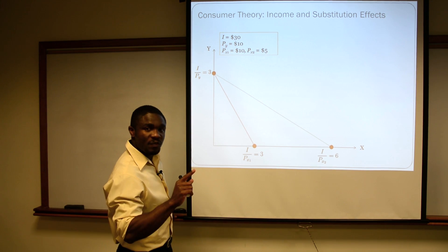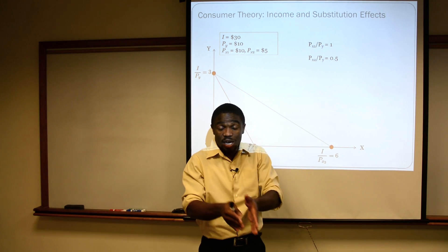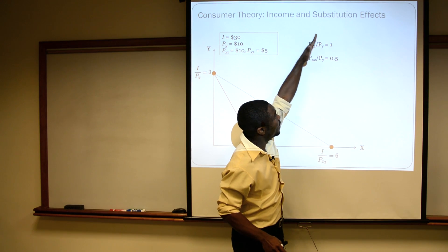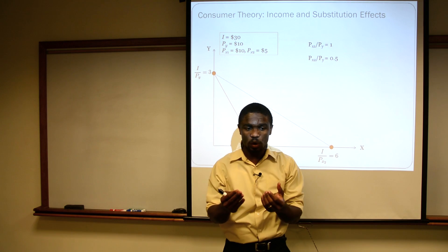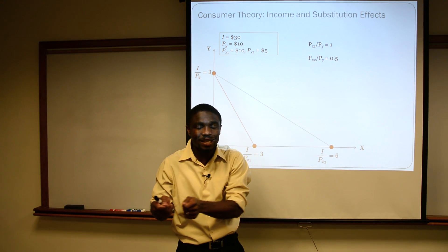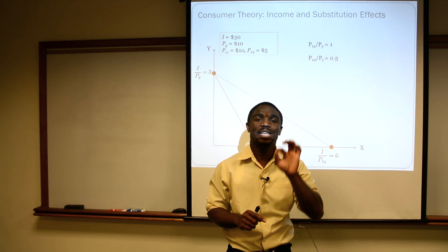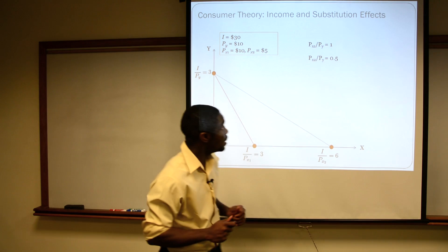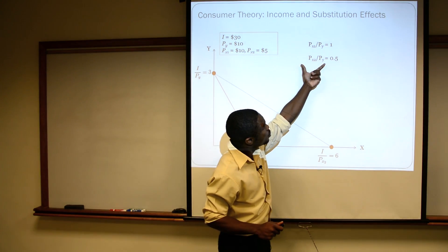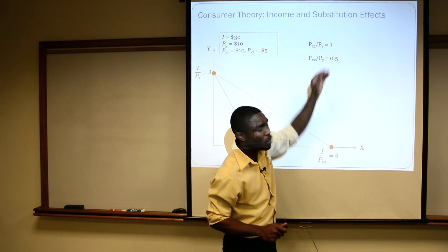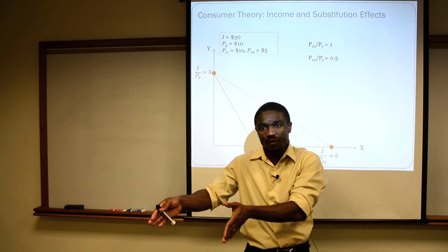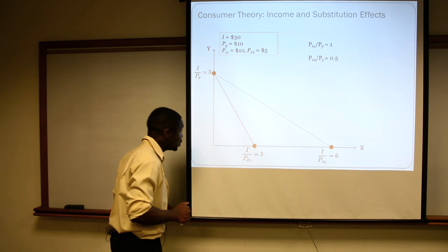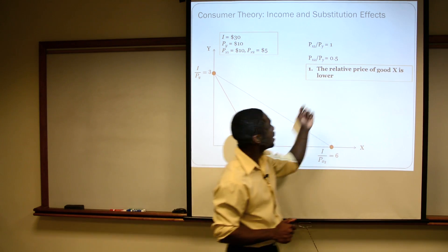What does this mean? The first thing is what consumers generally would respond. The good is cheaper — more specifically, the good is relatively cheaper. So the price of X divided by the price of Y originally was one. That's saying to us, if the consumer wants one more unit of good X, in a real sense, he or she has to give up exactly one unit of good Y. That's the relative price of good X. Note that the price of X has fallen; our new relative price of X, PX over PY, is now 0.5. It's saying if I want one more unit of X, I only have to give up a half of a unit of good Y. The relative price of good X is now lower.